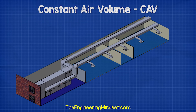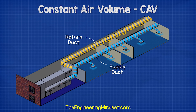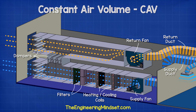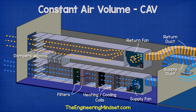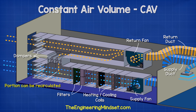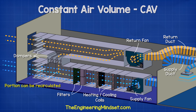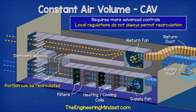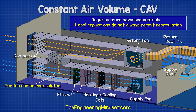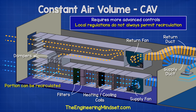The return grill is connected to the main return duct, which runs the length of the building and returns to the AHU. A separate return fan pulls the air in through the grill and brings this back to the main AHU. This dirty used air can then be rejected from the building, although some designs of AHU allow a portion of this air to be recycled back into the supply stream. Recycling a portion of this air will reduce the energy consumption of the system, though this does require more advanced controls and some local regulations do not always permit it.